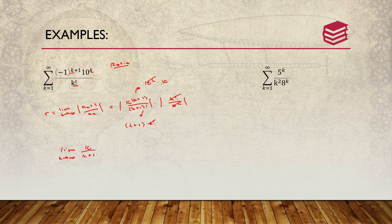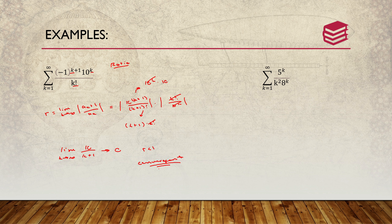As k approaches infinity, the denominator (k+1) grows very large, so the limit approaches 0. Based on the ratio test, r is less than 1, thus the series is convergent.